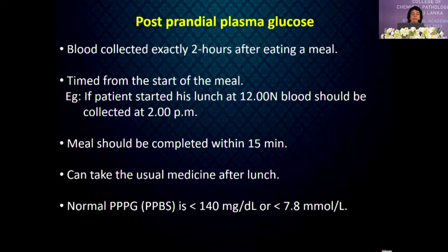Postprandial plasma glucose is blood collected exactly 2 hours after eating. The time should be measured from the onset of the meal, not the finishing time. The meal should be completed within 15 minutes, usual medication can be taken after the meal, and the normal postprandial plasma glucose is less than 140 mg/dL.